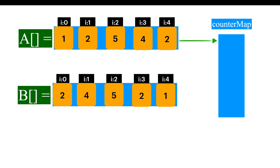The hash map maintains the key as the element of the first array, and the value is going to be the repeated count. So let's iterate the first array from 0 to n minus 1 and compare each and every element. If the element is present in the hash map, increment the counter. Otherwise, insert the element with counter 1.